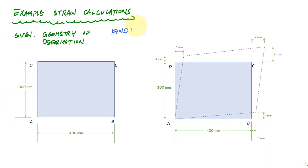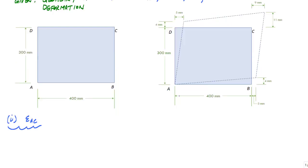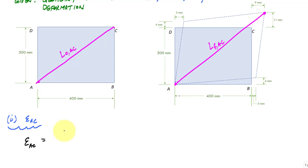I want to find the normal strain in line AC, the normal strain in line BD, the shear strain at A, and the shear strain at D. Let's start by calculating the normal strain in line AC. AC was originally a certain length, and after loading and deformation it became a new length. To calculate this we just need the change in length divided by the original length.